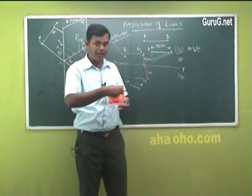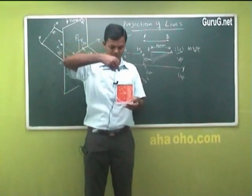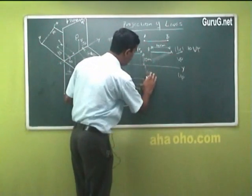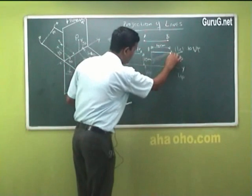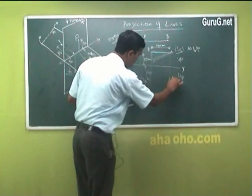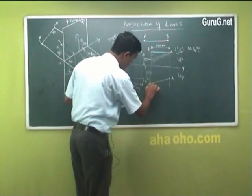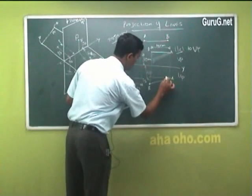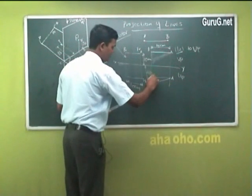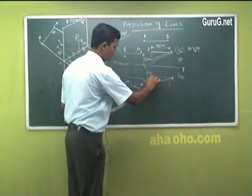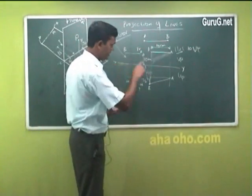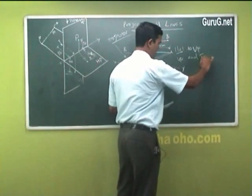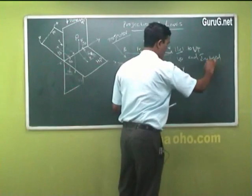The inclination, whatever is given, can be seen on the top view. When you come down, point A remains here and point B has been tilted. It should actually be like this — a straight line — but it has been tilted to this angle. So I would say this line is parallel to VP and inclined to HP.